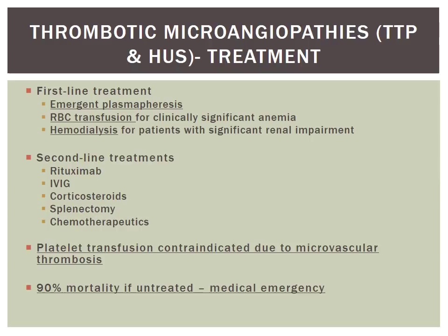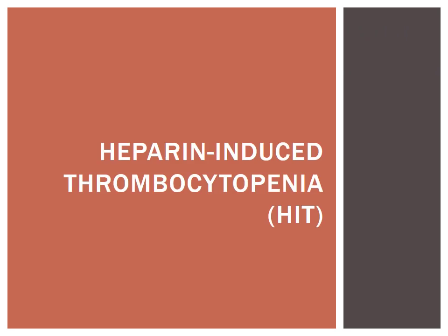First-line treatment for TTP involves emergent plasmapheresis, especially for idiopathic TTP caused by the gene mutation — this removes the antibodies that lead to clot formation. Other patients may receive red blood cell transfusions for clinically significant anemia and hemodialysis for significant renal impairment as seen in HUS. Second-line options include rituximab, IVIG, corticosteroids, splenectomy, or chemotherapeutics. Platelet transfusion is contraindicated in thrombotic microangiopathies, as platelets would continue to aggregate to microvascular thrombi. Treatment must be initiated as soon as possible, as there is 90% mortality if untreated.